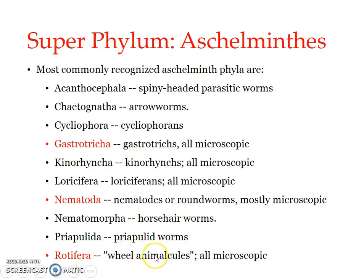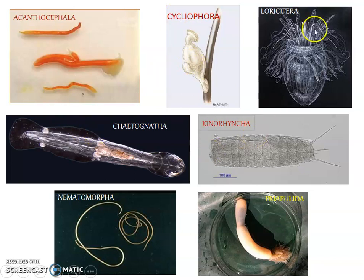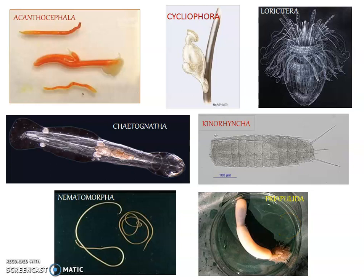Then we have Rotifera — we will be learning it in detail. So under this superphylum, we will be learning three phyla in detail: Gastrotricha, Nematoda, and Rotifera. The rest of the groups — Acanthocephala, Chaetognatha (arrow worms), Cycliophora, Kinorhyncha, Loricifera, Nematomorpha, and Priapulida — are covered briefly. These are the major phyla under Aschelminthes.